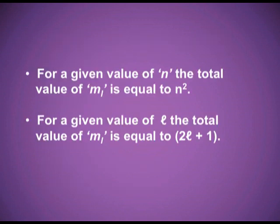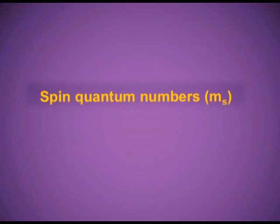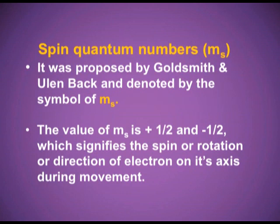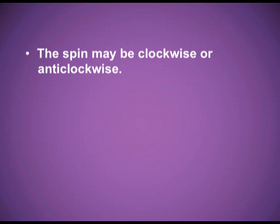For a given value of n, the total number of values of m is equal to n². For a given value of l, the total number of values of m is equal to 2l + 1. The last quantum number is the spin quantum number, which is only for the electrons. Its symbol is m with subscript s. It was proposed by Goldschmidt and Uhlenbeck. The value of m_s is +½ and −½, showing that electrons spin either clockwise or anticlockwise.